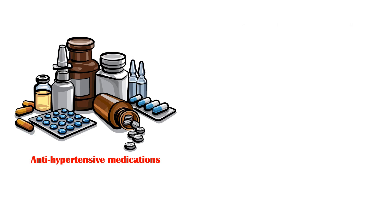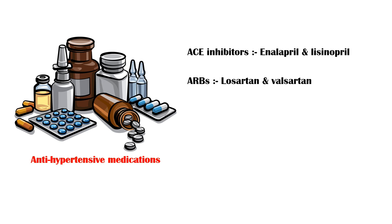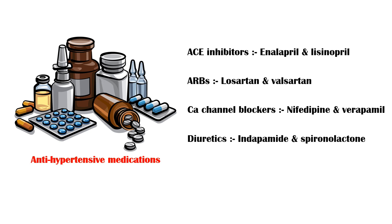Common antihypertensive medications include the following: angiotensin converting enzyme, or ACE inhibitors, such as enalapril and lisinopril; angiotensin receptor blockers, or ARBs, such as losartan and valsartan; calcium channel blockers, such as nifedipine and verapamil; diuretics, such as indapamide and spironolactone; and beta blockers, such as bisoprolol.